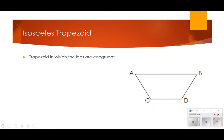An isosceles trapezoid is a trapezoid that has two pairs of congruent legs. The legs are not the bases. Just like in an isosceles triangle, the legs of an isosceles trapezoid are congruent, so AC is going to be congruent to BD in this case.